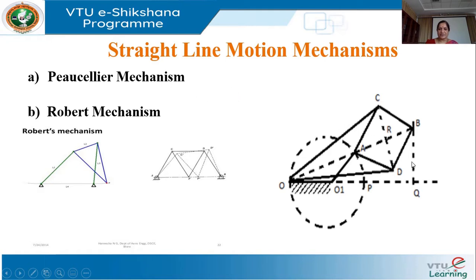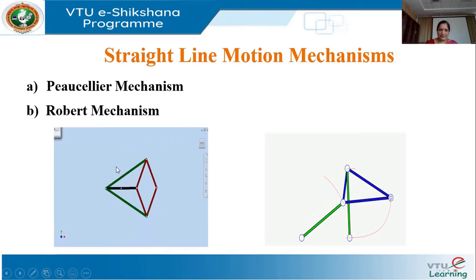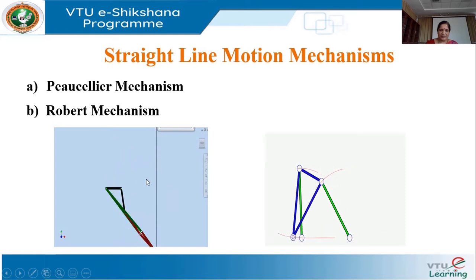In the Peaucellier mechanism, the link OC is equal to OD, and AC = BC = BD = AD. Also, O1O = O1P because OP is a diameter and O1 is exactly at the midpoint. Therefore it will trace an exact straight line path, as shown in the animation of the Peaucellier mechanism.